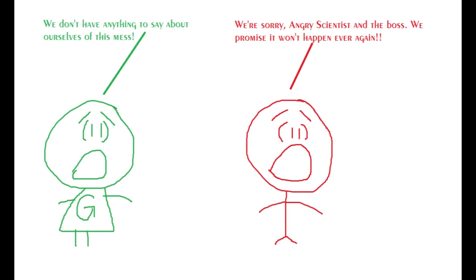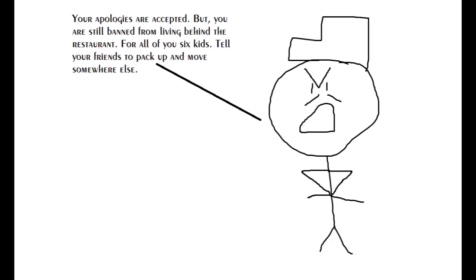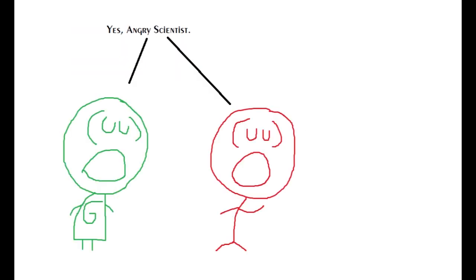We don't have anything to say for ourselves about this mess. We're sorry, angry scientist and the boss. We promise it won't happen ever again. Your apologies are accepted, but you are still banned from living behind the restaurant. For all of you six kids, tell your friends to pack up and move somewhere else. Yes, angry scientist.